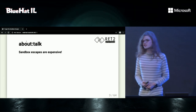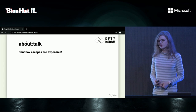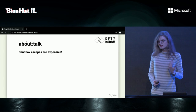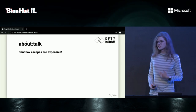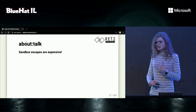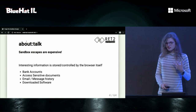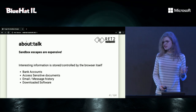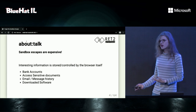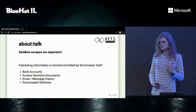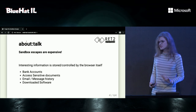The motivation for this talk is that sandbox escapes are expensive. A sandbox escape is usually the second part of a chain of exploits for a browser. It will require a second bug in whatever you're looking at, whether it's the operating system or a system service. That can be a lot of extra engineering time. But also, there's a lot of interesting information stored entirely within the browser itself — things like bank accounts, sensitive documents, email and messaging history, and it's also where you download software.